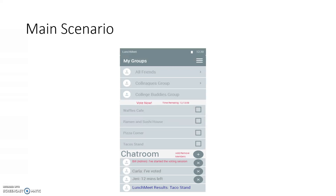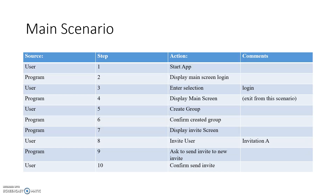Main scenario. I did not include errors for this one simply because it would have taken two hours to go through all the possible errors. I added this so that you could see the workflow. Step one, it starts the app. Step two, displays the main login screen. Step three, the user enters his login information. Step four, the program displays the main screen. This is where we really start on the main scenario.